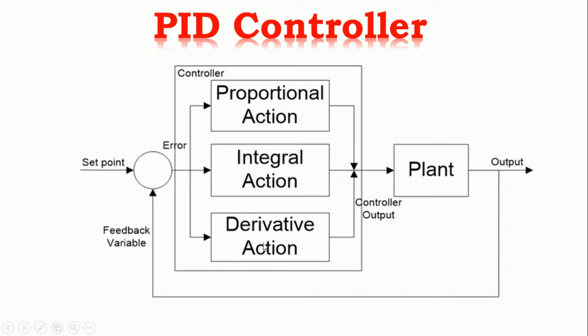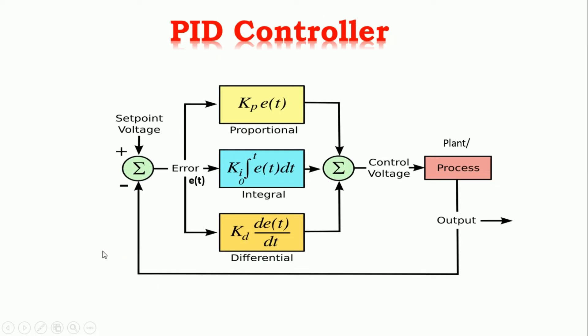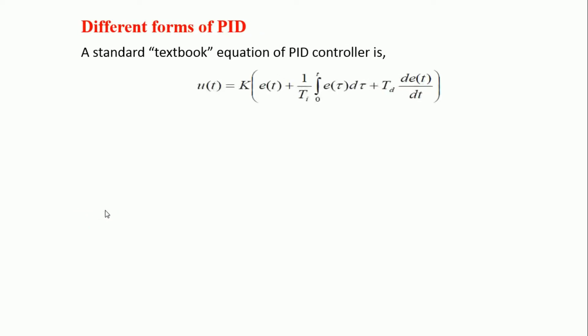The user just installs a controller and adjusts three gains to get the best achievable performance. Now see different forms of PID controller. This is the textbook form for the PID controller. u(t) is the output equal to K in bracket e(t) is the error plus 1 upon ti integral 0 to t e(t) dt plus td derivative of error with respect to time.